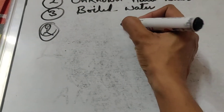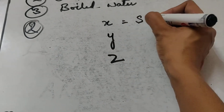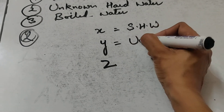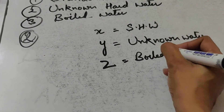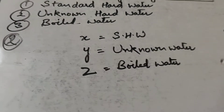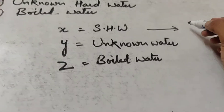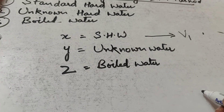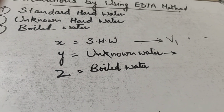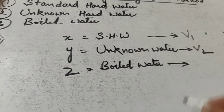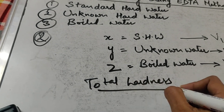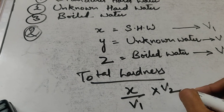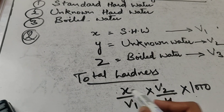Let me summarize for students performing this in the lab: X, Y, Z are the volumes of water taken — X is standard hard water, Y is unknown water whose hardness you need to find, Z is boiled water. Generally you take 20 ml each. V1 is the burette reading for standard hard water, V2 for unknown water, V3 for boiled water. Total hardness formula: (X/V1) × (V2/Y) × 1000.